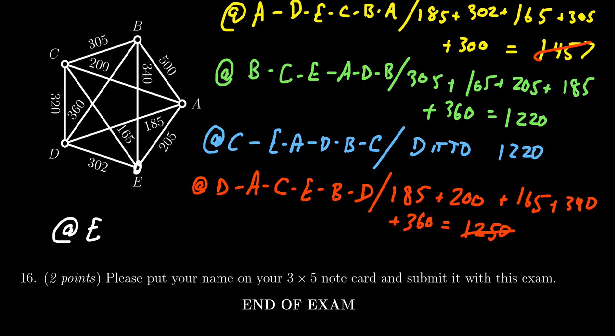Starting at E, the cheapest option is C at 165. At C, we go to A for 200. At A, we go to D for 185. At D, we go to B for 360. From B, we go back to E for 340. That's just the star in the middle, the same path we just did: E to C to A to D to B to E.